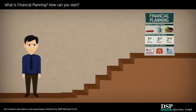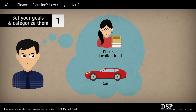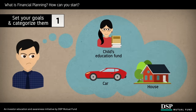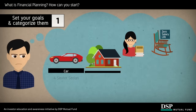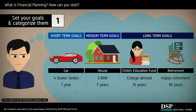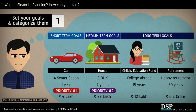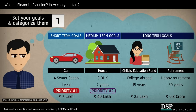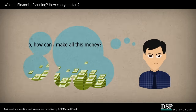Set your goals. It begins with you thinking of what your goals are, such as buying a new house or saving for your retirement. Categorize your goals as short, medium, and long-term goals. Set a target date and a priority level for each. Then understand and calculate the financial cost of achieving these goals.